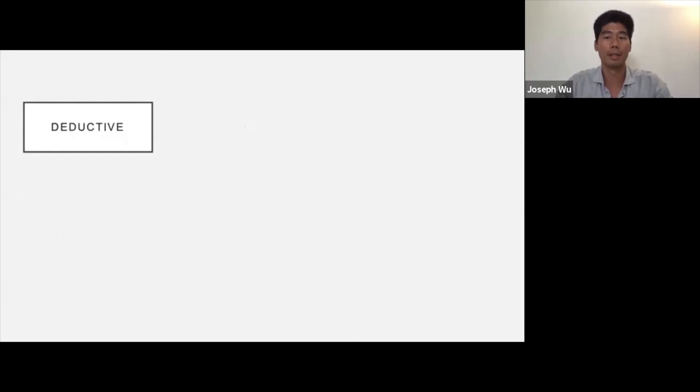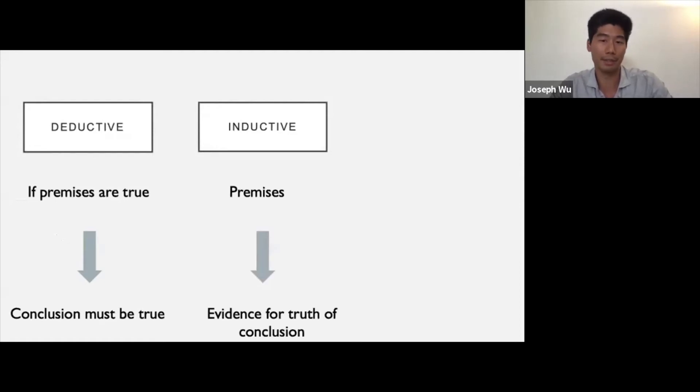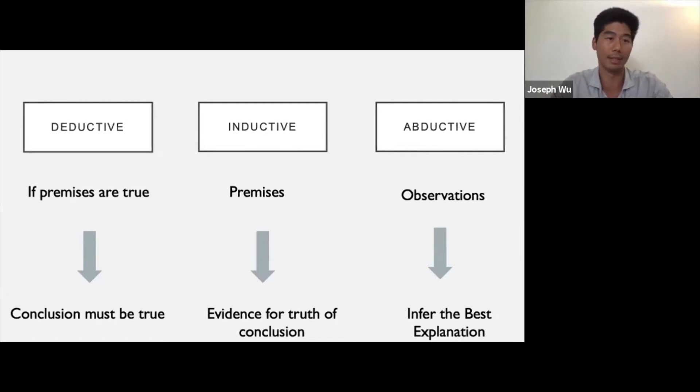To quickly recap, the first argument we considered was deductive, and the second one was inductive. In deductive reasoning, the truth of the premises guarantees the truth of the conclusion. In inductive reasoning, the truth of the premises provides evidence for the truth of the conclusion, but it doesn't guarantee it's true. And just to quickly flag it, in another form of reasoning called abductive reasoning, inferences are made to the best explanation that accounts for certain observations. Abductive reasoning is going to be the topic of the next tutorial, but I just wanted to make a quick note of it and contrast it to inductive and deductive reasoning.